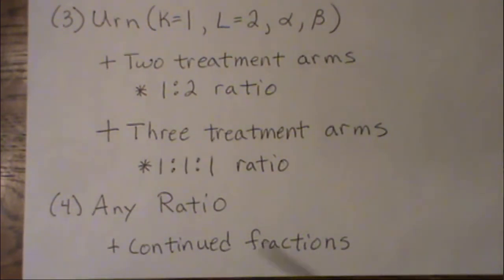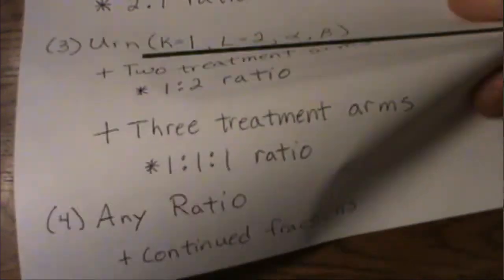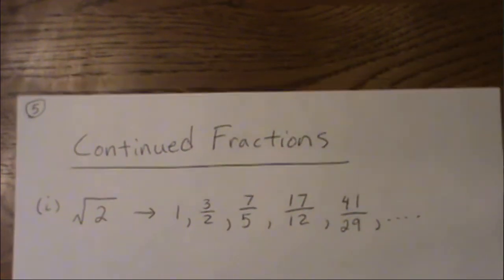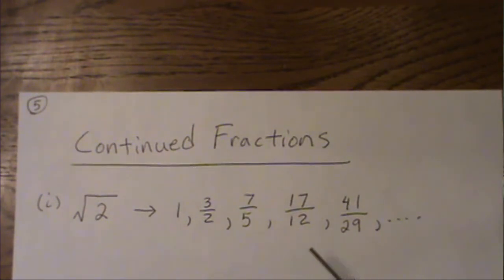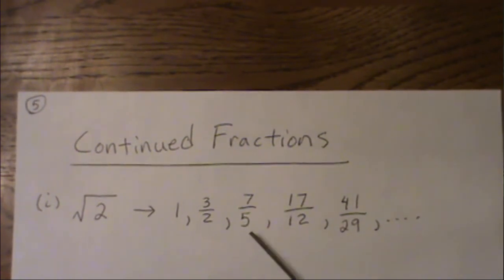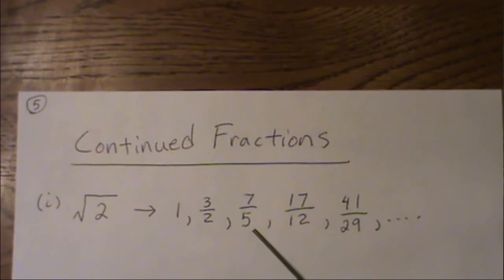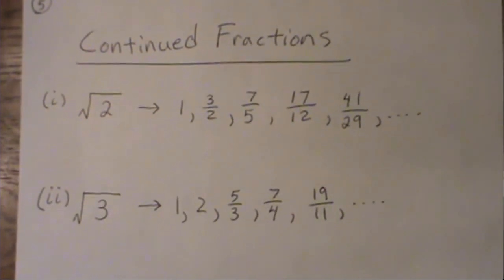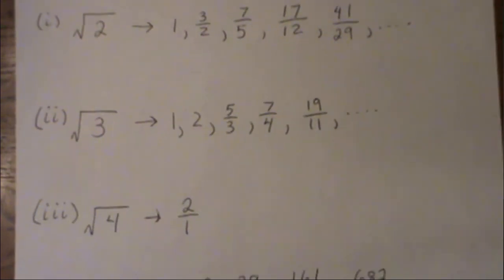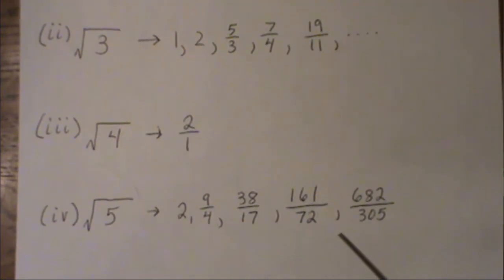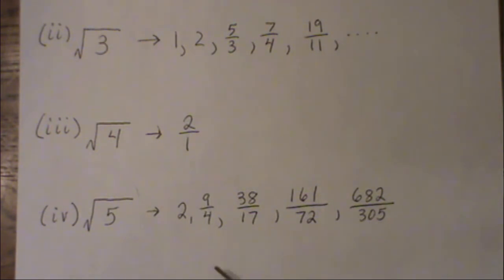Using urn models we can achieve any ratio we want, even irrational ones. There's a series of continued fractions — a fascinating property — where each successive ratio gets a little closer to the square root of two. For example, a seven-to-five ratio is really close to square root of two; a seven-to-four ratio is really close to square root of three. The further you go out in a continued fraction, the more accurate it is to the decimal representation.